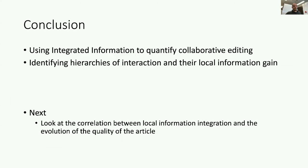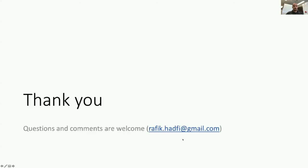I've covered one possible way of quantifying interaction using integrated information, taking the case of Wikipedia article editing and how to find hierarchies of interaction. For the moment, this is preliminary work. The next step is to look at how these integrated information values correlate with actual quality — not of a single article, but of the article at different time steps of its evolution. If we can correlate the two, then phi could actually become a predictive measure of quality for articles, as opposed to looking at the semantic or linguistic features of the text. If you have any questions, please feel free to ask. More details are available in the paper, and thank you for your attendance.